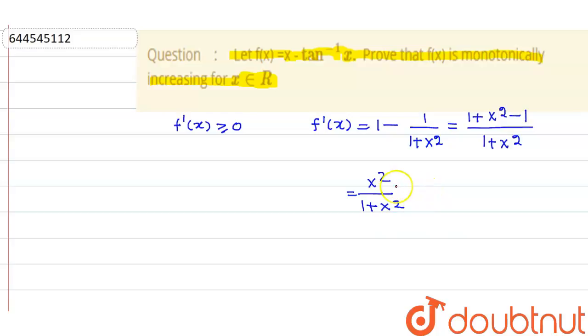I can say that for x belongs to R, this whole thing will always be greater than or equal to 0. That means this is a monotonically increasing function for x belongs to R.